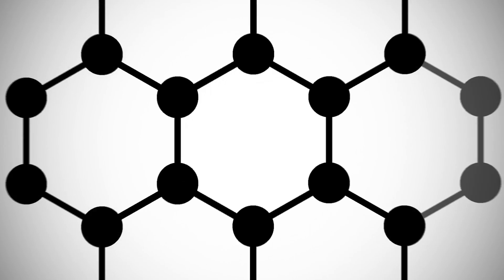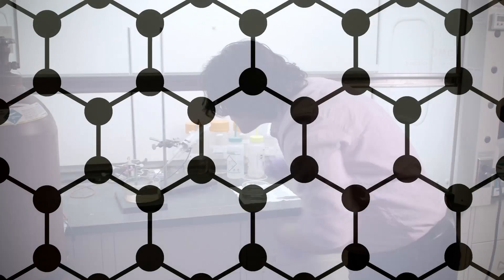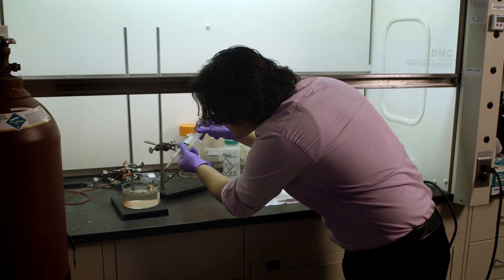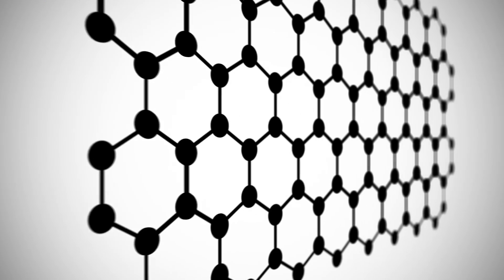Graphene is a new material that is only one atom thick, but it can be as large as a piece of paper or even a roll of newspaper. It's made completely of carbon and it looks like atomic scale chicken wire.